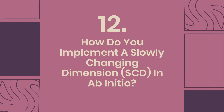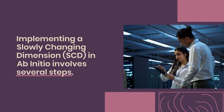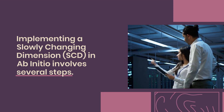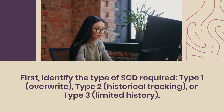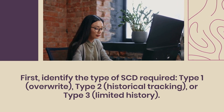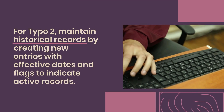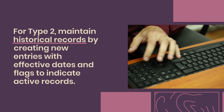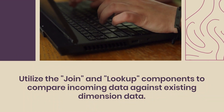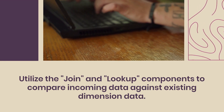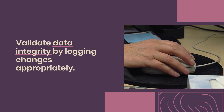Question 12: How do you implement a slowly changing dimension (SCD) in AbInitio? Implementing an SCD in AbInitio involves several steps. First, identify the type of SCD required: Type 1 (overwrite), Type 2 (historical tracking), or Type 3 (limited history). For Type 1, simply update existing records with new data. For Type 2, maintain historical records by creating new entries with effective dates and flags to indicate active records. Utilize join and lookup components to compare incoming data against existing dimension data. Ensure to manage primary keys, handle duplicates, and validate data integrity by logging changes appropriately.